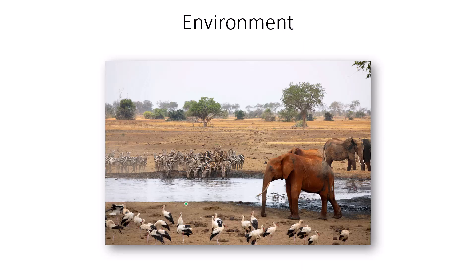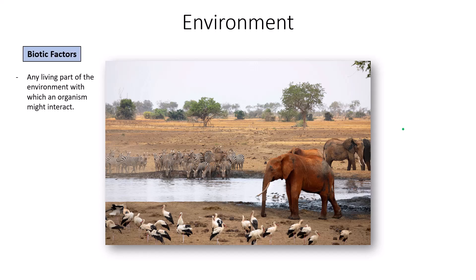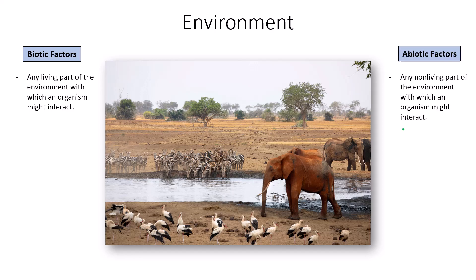When you look at a particular environment, you always notice the biotic factors first — those are the things that are living, the things that are easier to appreciate. When we look at just this one snapshot, you see a variety of different biotic factors. A biotic factor is any living part of the environment with which an organism might interact — like a tree, a zebra, or a crane.